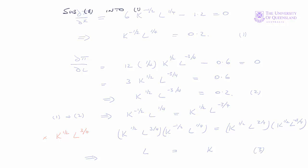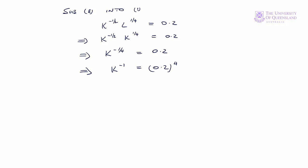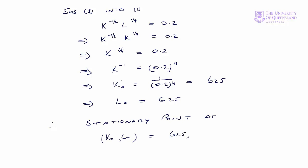We can call that equation 3. We can substitute equation 3 into equation 1. Equation 1 was K to the minus 1/2 times L to the 1/4 equals 0.2. Substituting L = K, it implies K to the minus 1/2 times K to the 1/4 equals 0.2, so K to the minus 1/4 equals 0.2. That gives us K to the minus 1 equals 0.2 to the 4, which implies K equals 1 divided by 0.2 to the 4, and that equals 625. We'll call that K₀. Since K equals L, L₀ is also equal to 625. So we have a stationary point at (K₀, L₀) = (625, 625).